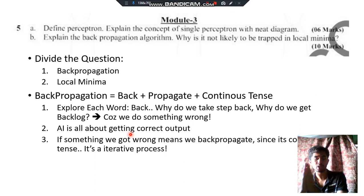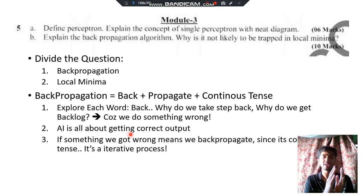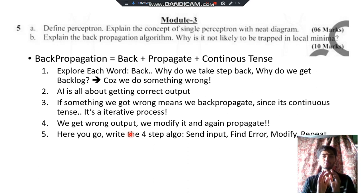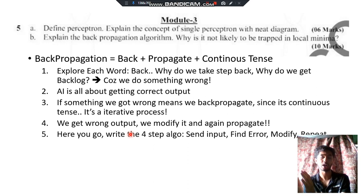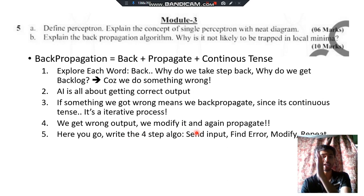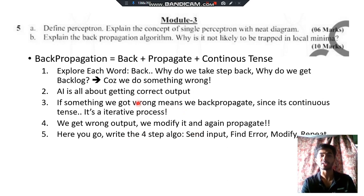You start from the input, move to the output, get a wrong output, come back, modify the error, go forward again — this iterative process is backpropagation. The four steps are: send the input, find the errors, modify the errors, send again and find the output, then repeat until the output matches. That's all backpropagation is about. Apply the same approach for local minima.